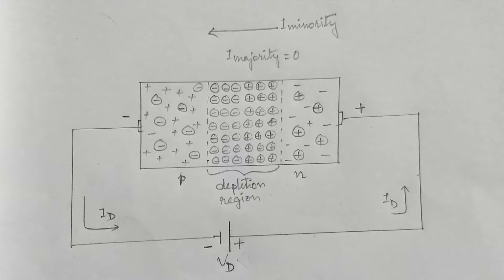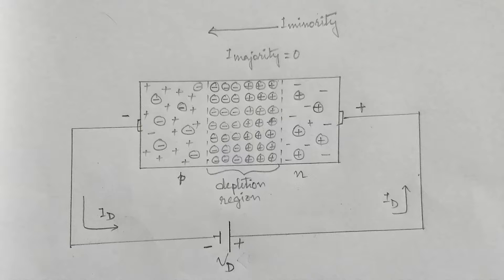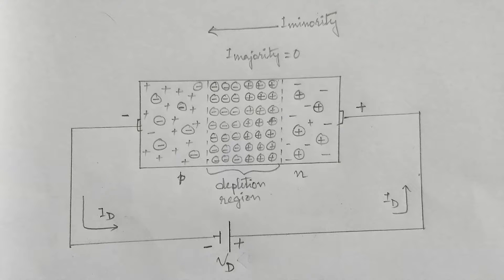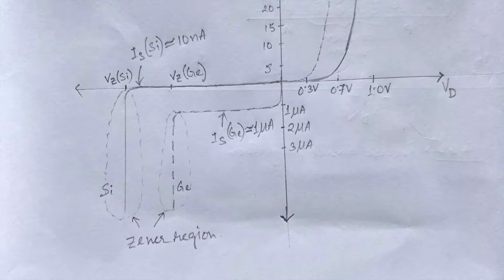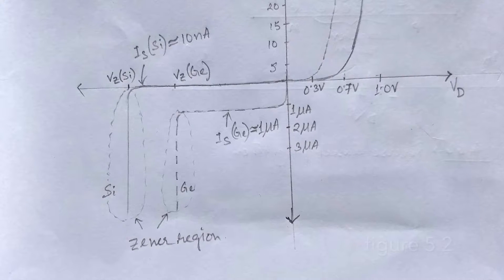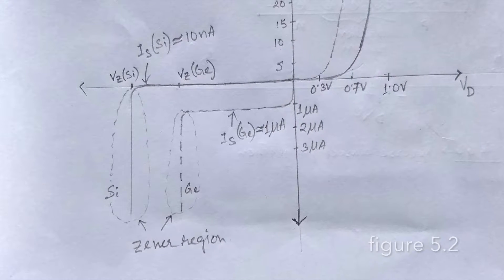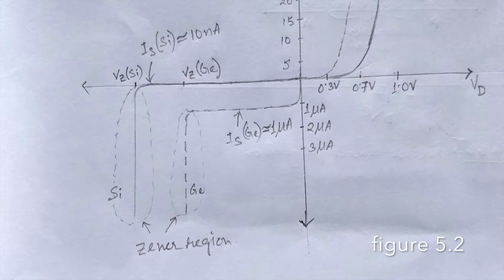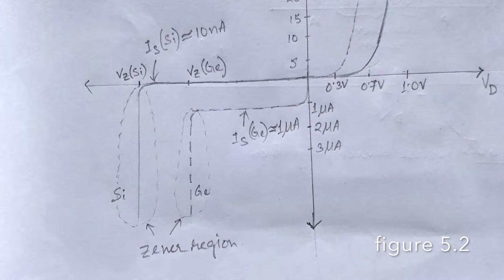This will also generate holes in the materials. During collision, the valence electrons will absorb sufficient energy to leave the parent atom. Thus ionization occurs resulting in more number of carriers. This process is called the avalanche breakdown of the diode.